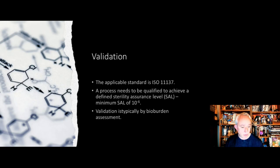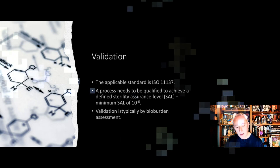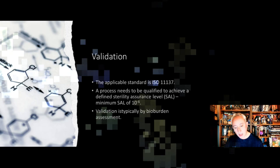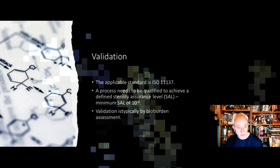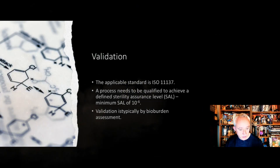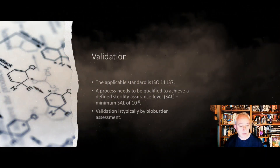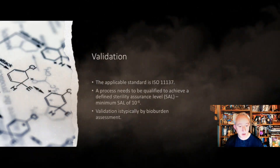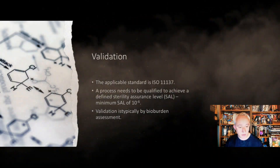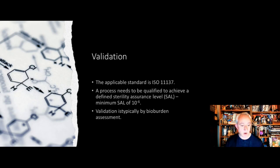We assess the initial bioburden and then assess the bioburden at this sublethal dose, looking for a ratio of around two units recovering low-level bioburden out of every 100. The dose can then be increased, and through this level of overkill we can achieve the required sterility assurance level of 10⁻⁶ or 10⁻¹² depending on where we're pitching it.